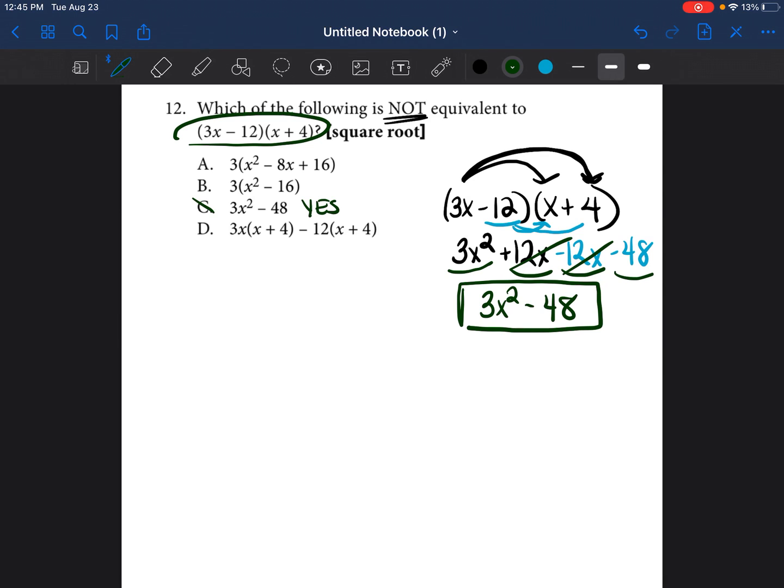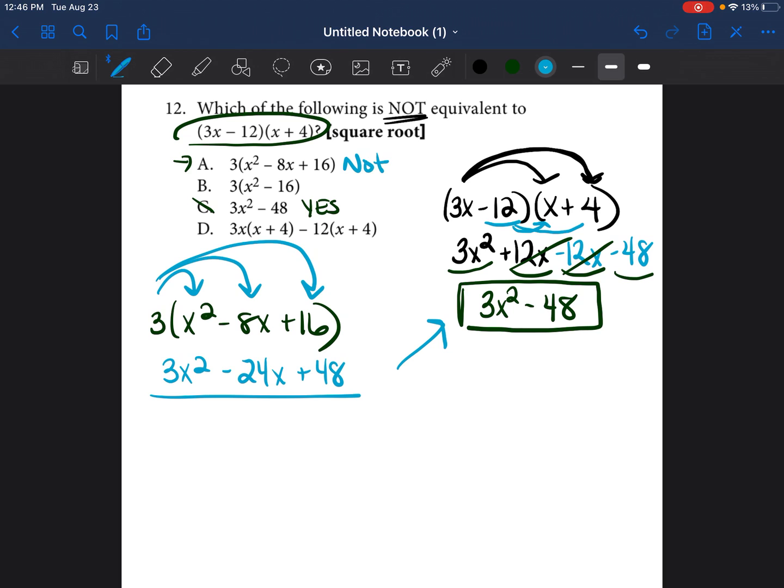All right. So what about A? Let's go ahead and break down A. 3 times x squared minus 8x plus 16. We're going to go ahead and distribute the 3. 3 times x squared is 3x squared. 3 times negative 8x is negative 24x. And then 3 times 16 is going to be positive 48. This is not the same as this. So A is not equivalent. So we may have gotten our answer.